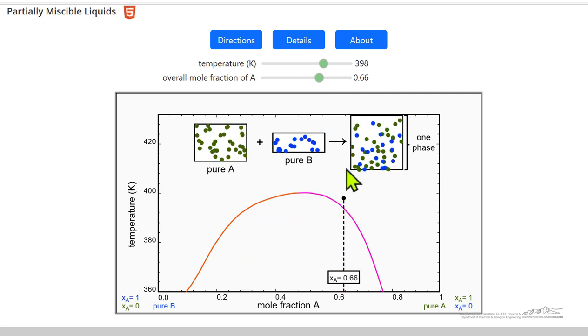I eventually get the point where we have one phase, so the molecules are completely miscible in this region. The idea is that over some range of temperature and mole fraction, we have phase separation. Outside of that range, we have complete miscibility for this binary mixture.